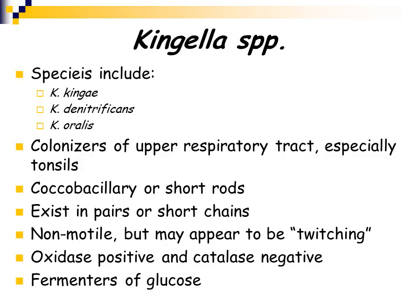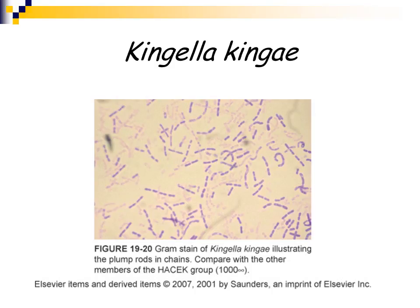Kingella species is our last organism in the HACEK group. The species include Kingella kingae, Kingella denitrificans, and Kingella oralis. These are normal flora of the upper respiratory tract, especially around the tonsil area. They are coccobacilli to short rods, exist in pairs or short chains, and are non-motile — though on a wet mount they would appear to be twitching. They are oxidase positive, catalase negative, and they will ferment glucose. Here is a gram stain of Kingella; they can be small to medium-shaped and will chain together, appearing longer due to chaining.